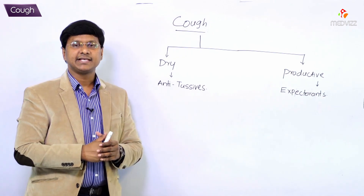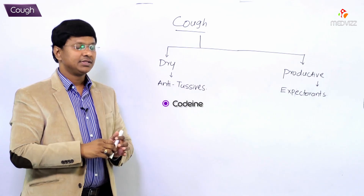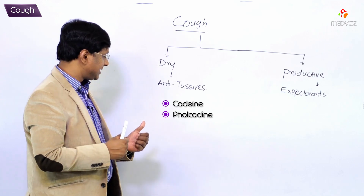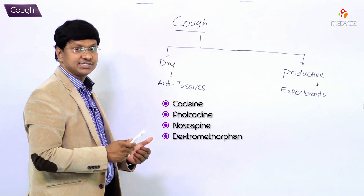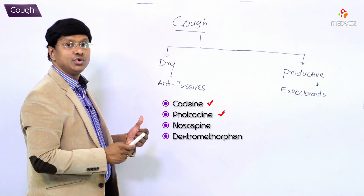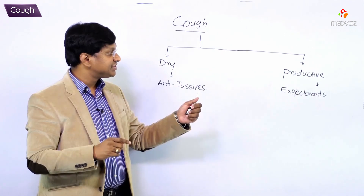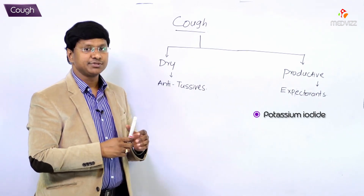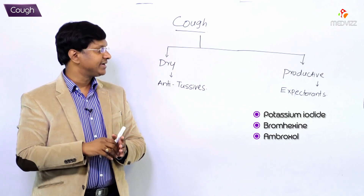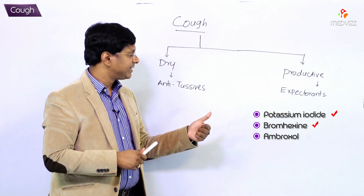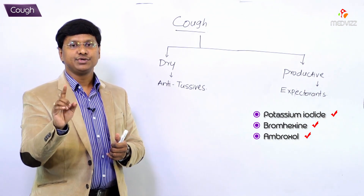Examples of anti-tussives include codeine, pholcodeine, noscopine, and dextromethorphan. Whereas the drugs used as expectorants are potassium iodide, bromhexine, and ambroxol. This is the classification of the drugs used in the treatment of cough.